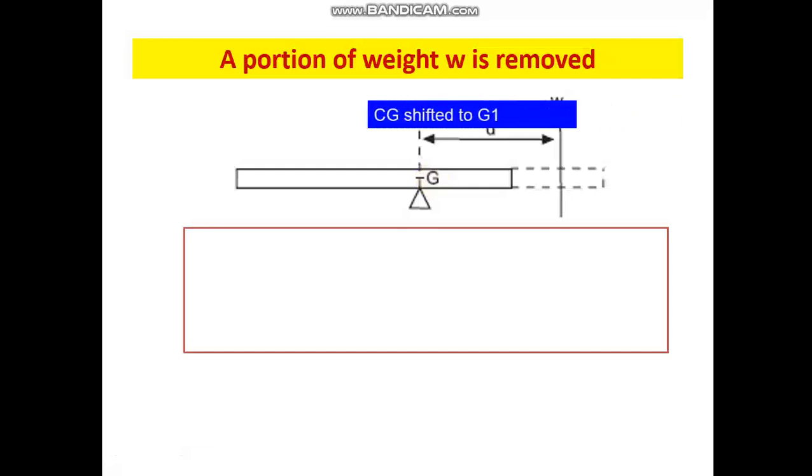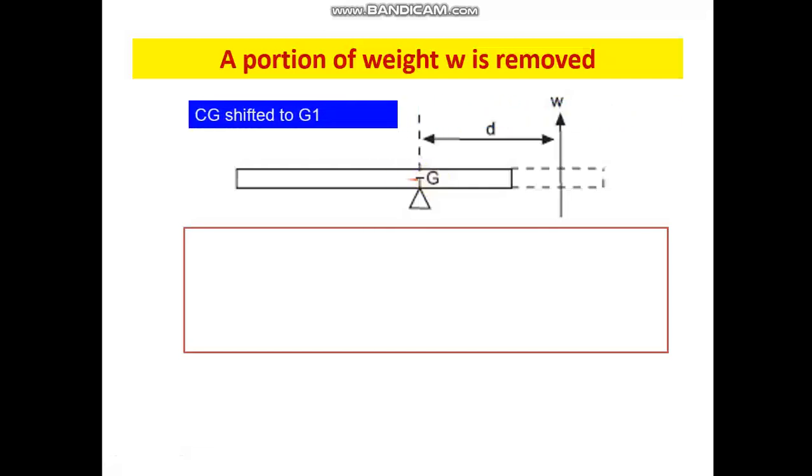In this scenario, there will be a shift of centre of gravity towards a new point called G1. The point to be noted here is that this G1 will be lying at a location which is away from G, which is away from the removed mass. G has shifted from right to left. The new position of centre of gravity G1 will be at a location away from the removed mass.